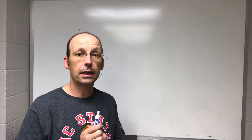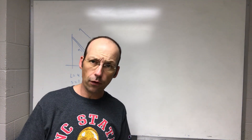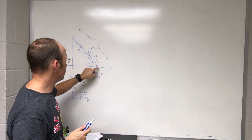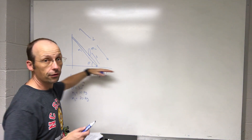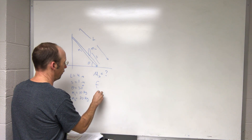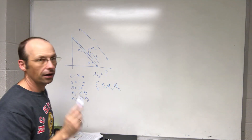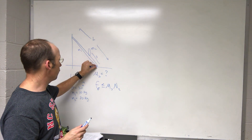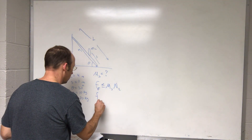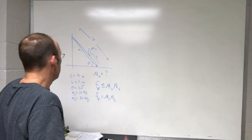If this is the minimum coefficient of friction, then I know that the friction force F_f is less than or equal to mu_s times N. At the minimum coefficient, this becomes an equality. So the friction force is proportional to the normal force — the harder the two surfaces are pushed together, the more friction you get.